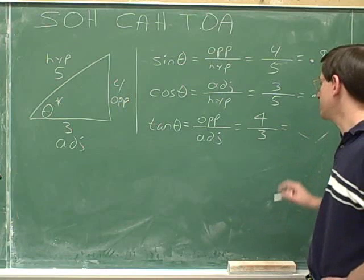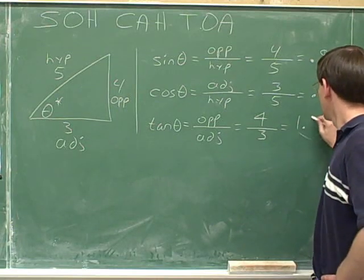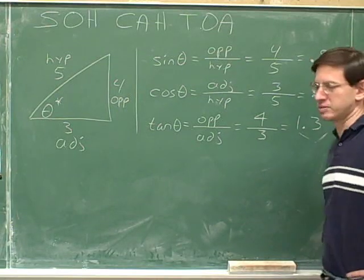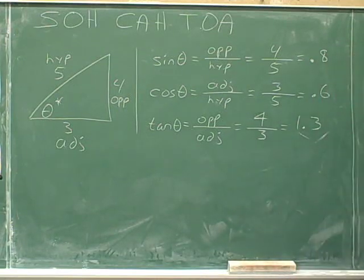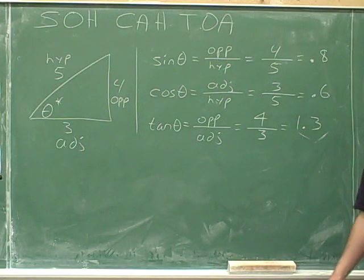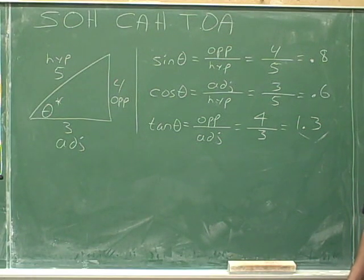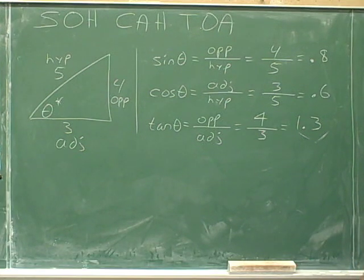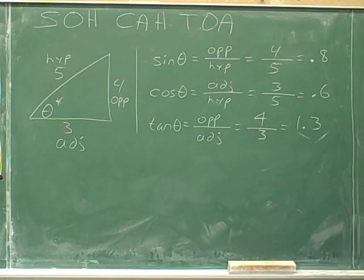4 divided by 3 gives approximately 1.3. So now we've figured out all three: the sine of theta is 0.8, the cosine of theta is 0.6, and the tangent of theta is approximately 1.3.